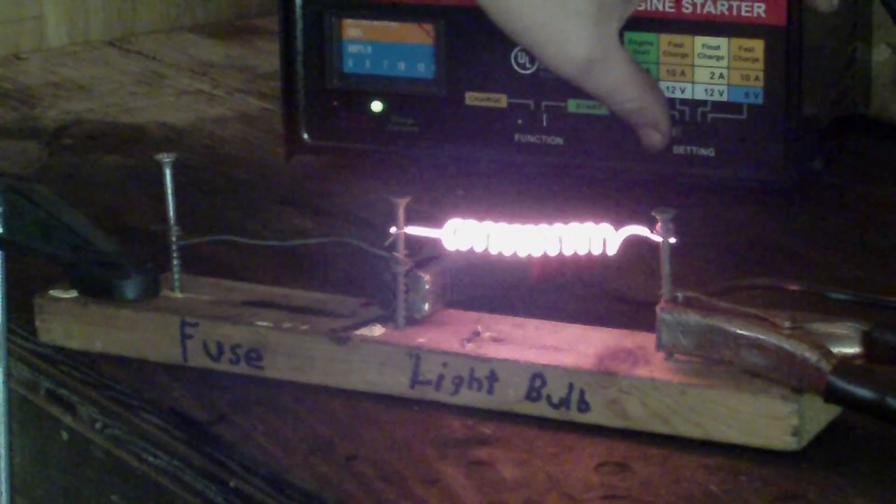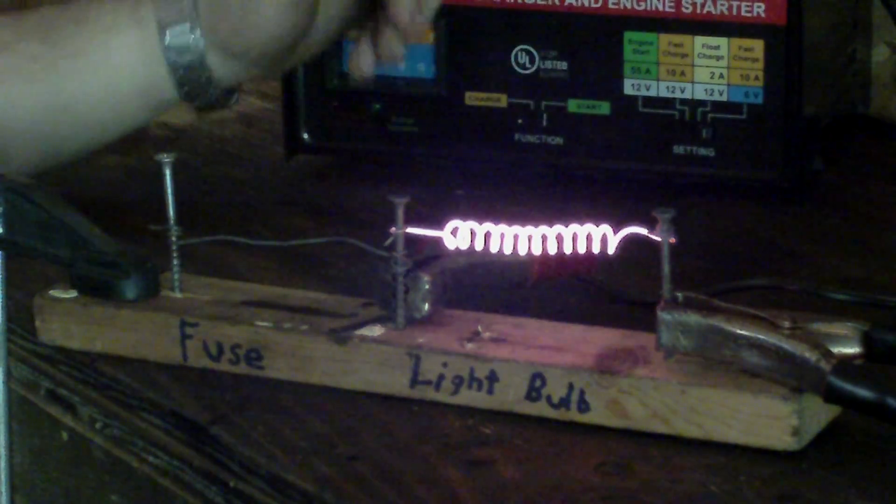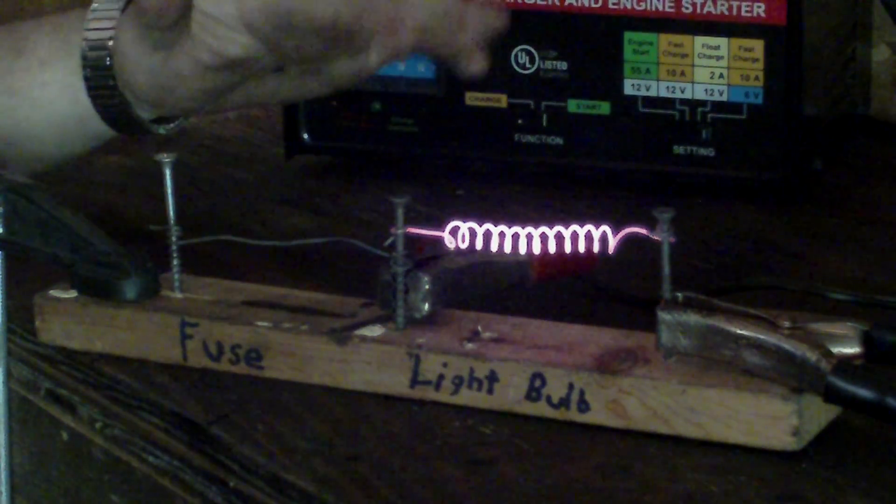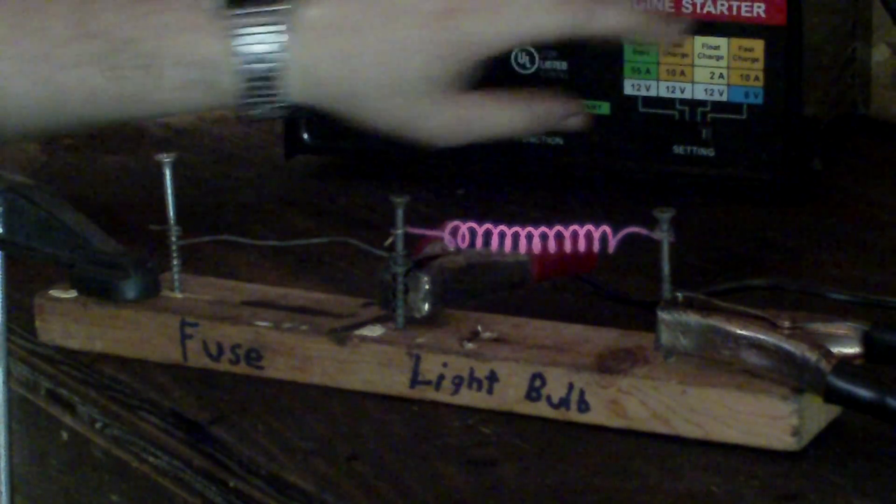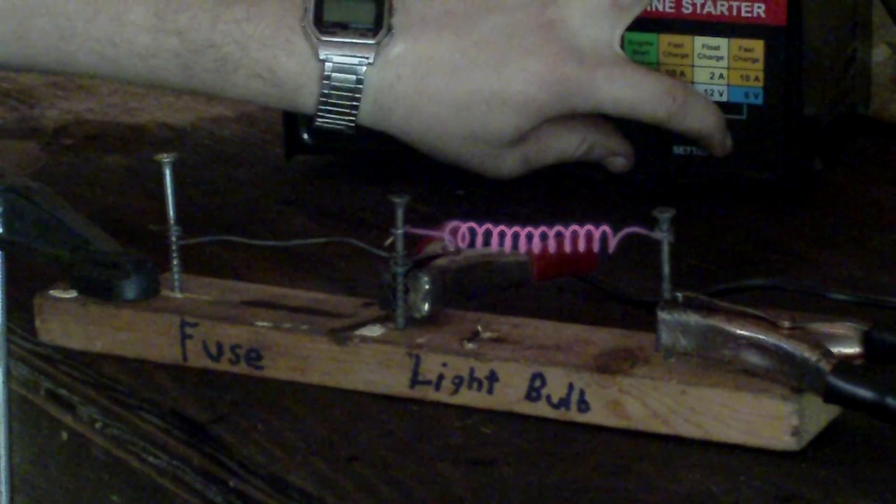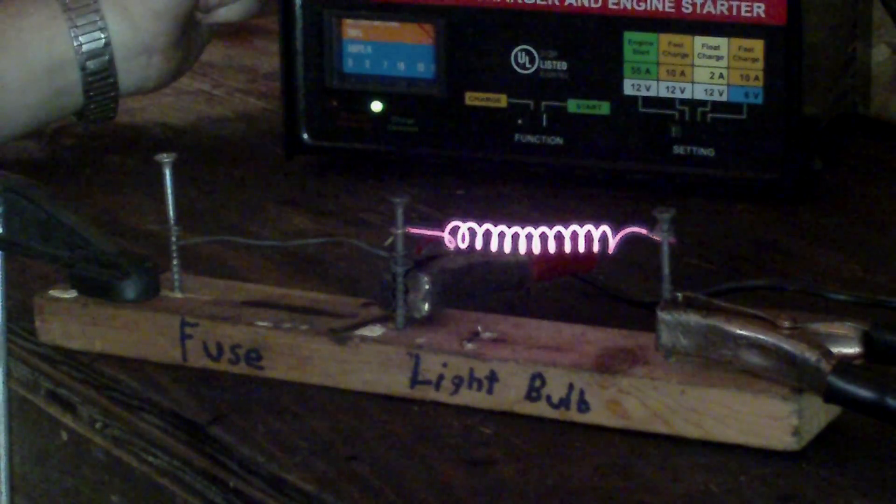But now, let's see if I put it on six volts. You'll see it dimmed down because you're reducing the voltage, which lowers the current through the wire. That's six volts. That's 12 volts.